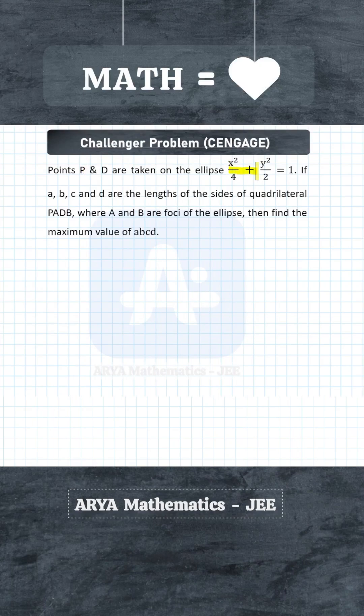Points P and D are taken on this ellipse. If a, b, c, and d are the lengths of sides of quadrilateral PADB, where A and B are the foci of the ellipse, then we have to find the maximum value of abcd.